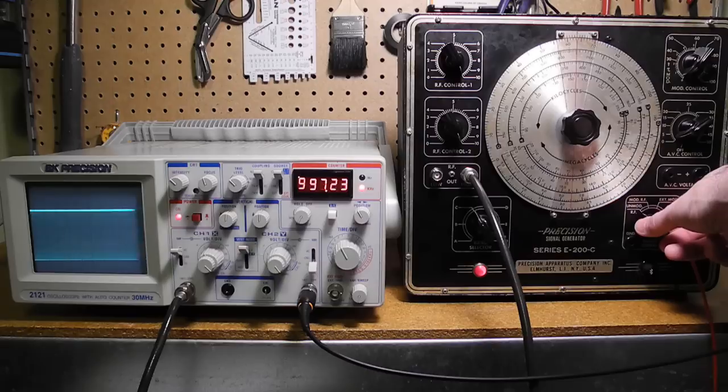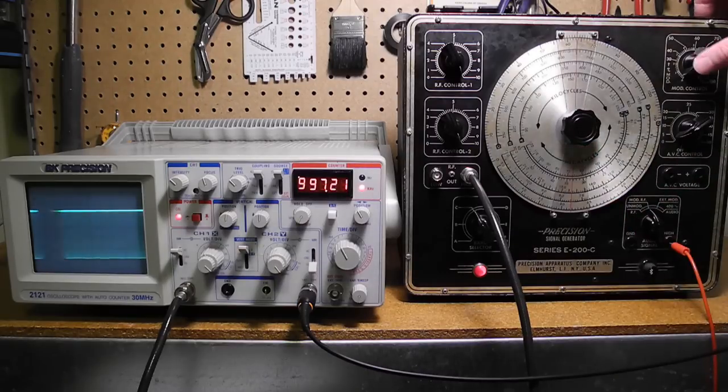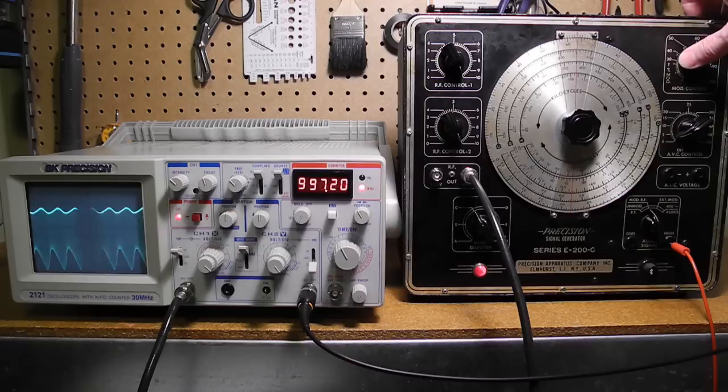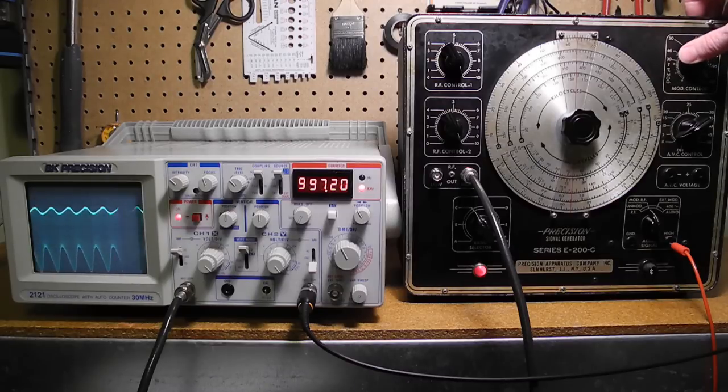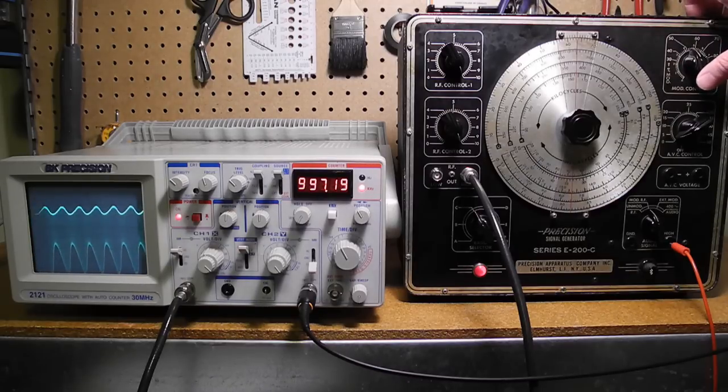Now we switch to modulated RF. As we increase the modulation, we can see the signal amplitude modulated at 400 hertz.